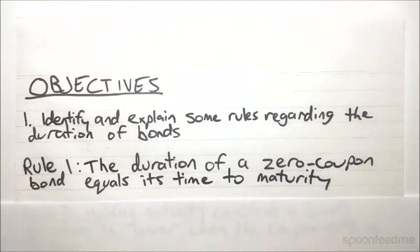So rule number one, which is really the simplest, is that the duration of a zero-coupon bond is equal to its time to maturity. This is really intuitive and easy to understand. We know that the duration is the weighted average time until cash flows are received. Well, with a zero-coupon bond, there's only a single cash flow. One cash flow, one time, the average of a single number is just itself. So obviously, that's just going to be the time to maturity.